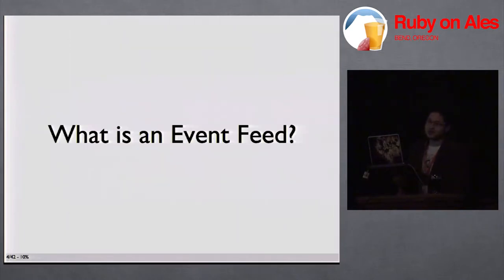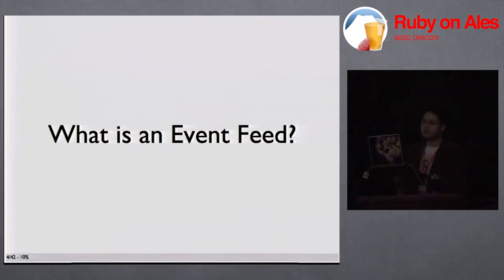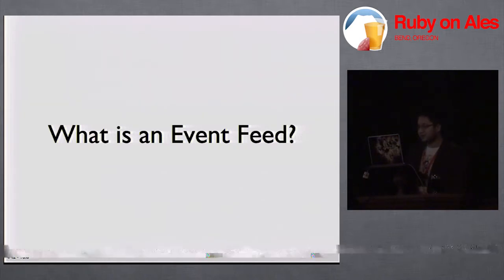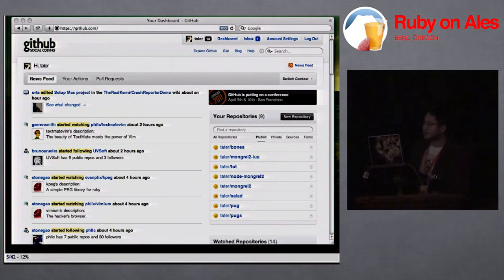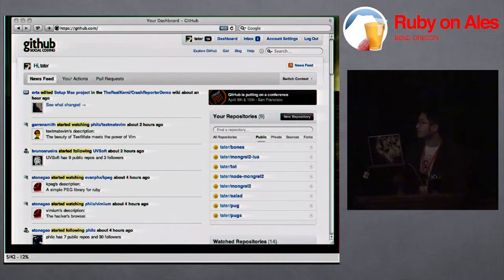So, what is an event feed? I feel it's necessary to get the common vocabulary down. Because if you search for events on Google, you'll find lots of different meanings of the word. This is not event-driven programming, not talking about scheduled events or anything like that. We're just talking about basically the news feed on GitHub — just a feed of all the stuff that your friends on GitHub are doing, every time they make any change to a repo or whatever.